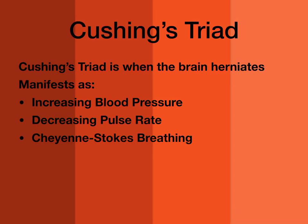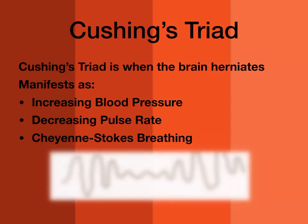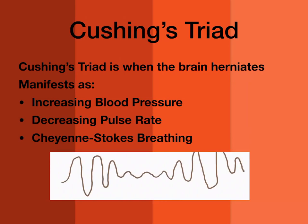We typically also have a reduced Glasgow Coma Scale of 8 or less. Cheyne-Stokes breathing is deep rapid breathing followed by a period of slow shallow breathing, maybe even some apnea, then it starts breathing fast and deep again, then slow and shallow, then fast and deep — repeating this process over and over again.